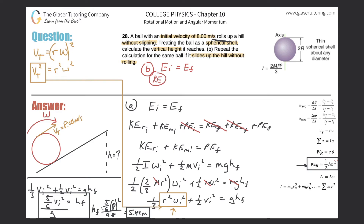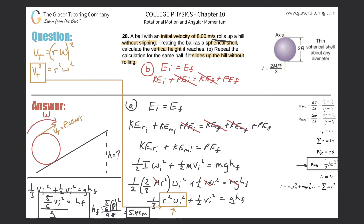Setting up conservation of energy for Part B: KEi plus PEi equals KEf plus PEf. There is no initial PE (starting at the bottom), and no final KE (finding maximum height), so both those terms cancel. We're left with: kinetic energy initially equals potential energy finally, i.e., one-half mvi² equals mghf. The masses cancel.